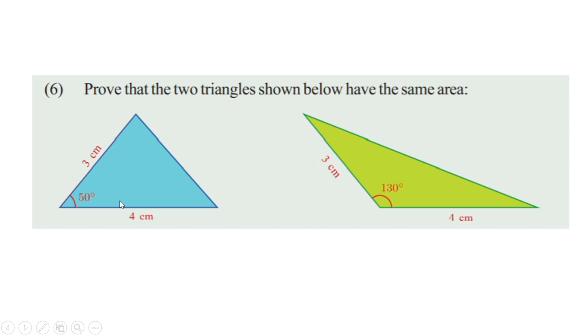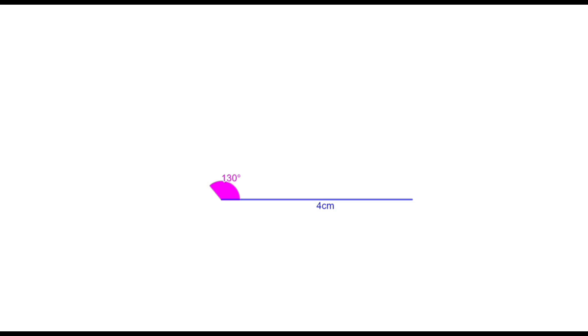Now the next problem: prove that the two triangles shown below have the same area. Let me draw the second triangle first. The base is 4 cm — draw a line of length 4 cm. The angle at one end is 130 degrees; take 3 cm and draw another line, then join the ends to get the required triangle. This is our second triangle.